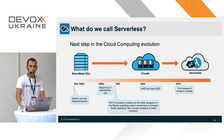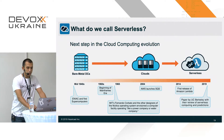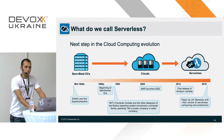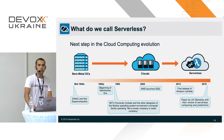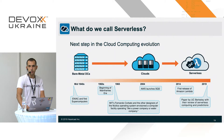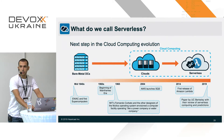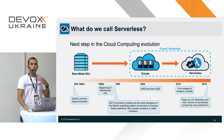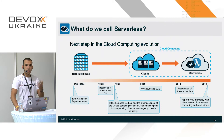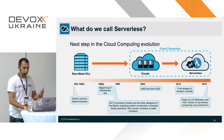Ten years later Amazon launched Lambda, starting the serverless evolution. In 2019, UC Berkeley published a paper predicting that serverless would see very wide adoption in just ten years — interesting because ten years earlier the same university had made the same prediction about cloud computing. Cloud computing is essentially the on-demand delivery of compute power, database storage, and application services over the internet with pay-as-you-go pricing — and that is what serverless is about historically.